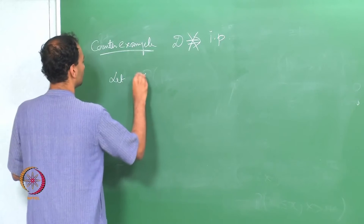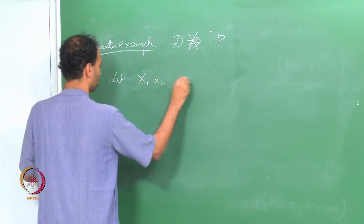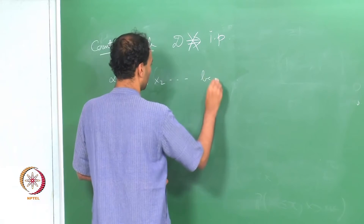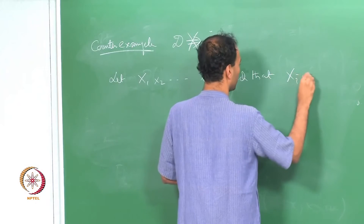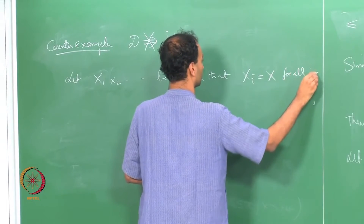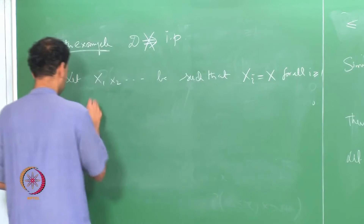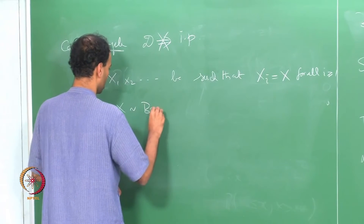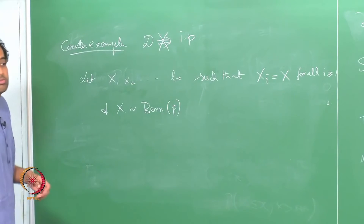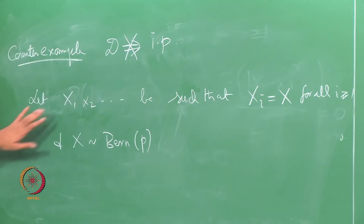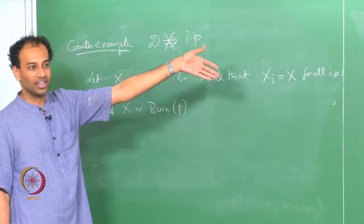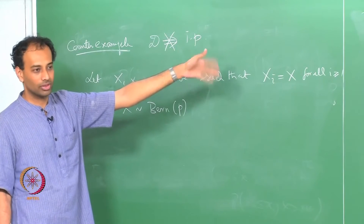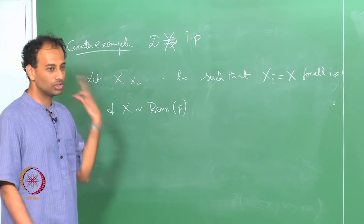Let X_1, X_2, … be such that X_i = X for all i, where X is Bernoulli(1/2). So the entire sequence is just X, X, X, … and that X takes value 1 with probability 1/2 and value 0 with probability 1/2.